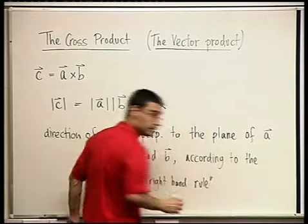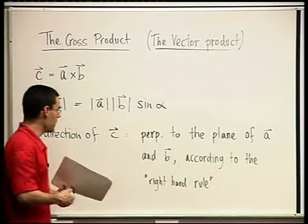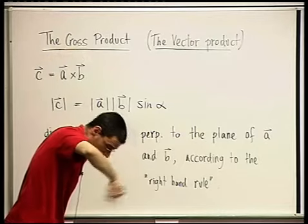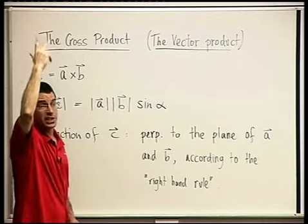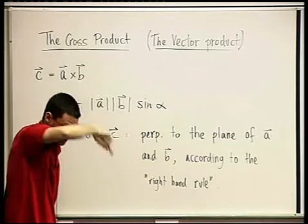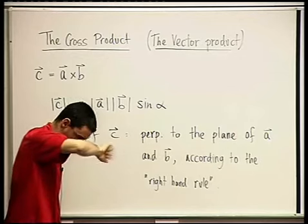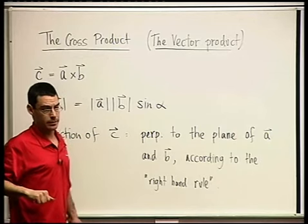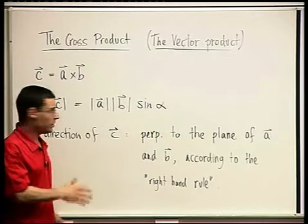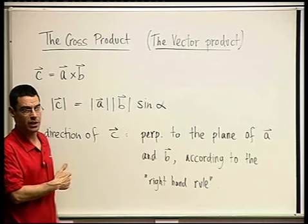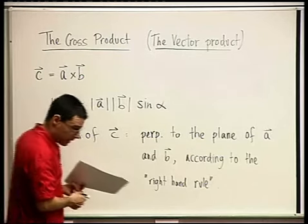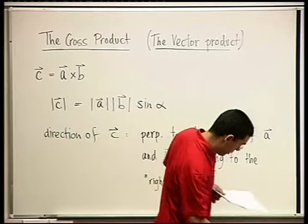Another way of saying this is: if you stand on a high tower looking down at the plane of A and B — so you're standing on top of C — you should see A and B going counterclockwise. There are many ways of saying this; as long as you're getting the right answer, any way is fine.